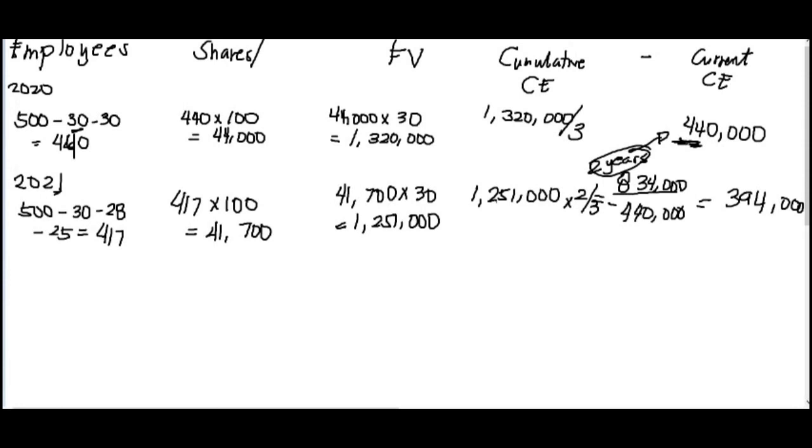So times 2 divided by 3. What comes out is for 2 years, 834,000. But you already recognized 440,000 in the first year, so subtract it. 834,000 minus 440,000. What comes out is 394,000. That's it. Okay, for 2022, let's continue while we're at it.